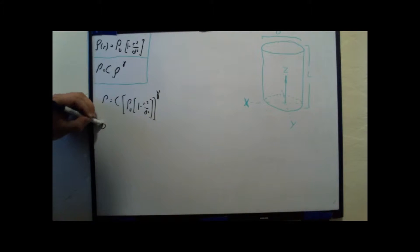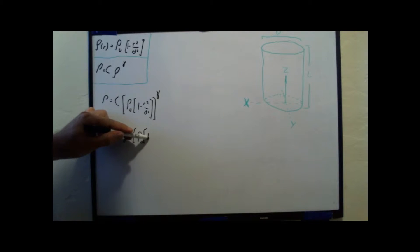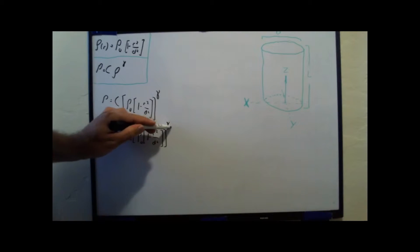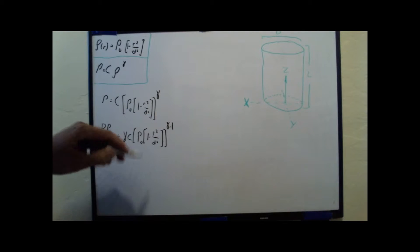I'm going to say the derivative dp/dr is equal to... Now in this case, I've got a power, so I start off with doing just the power rule. Obviously, that's going to be gamma c times rho naught times 1 minus r squared over d squared to the gamma minus 1.